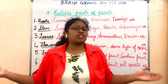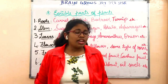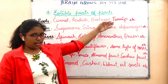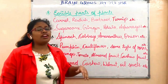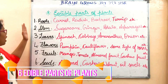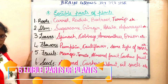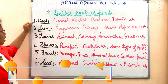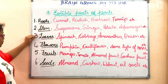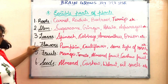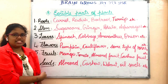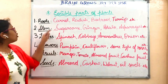Food is also very important for our existence. We eat almost all parts of the plants, and these parts are known as edible parts of the plants. There are six edible parts of the plants: the roots, the stem, the leaves, flowers, fruits, and seeds.